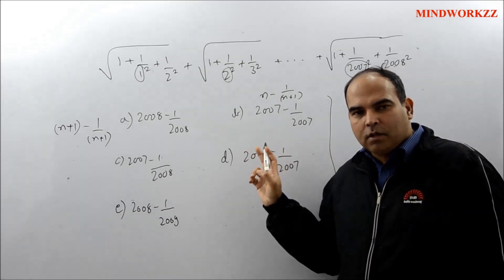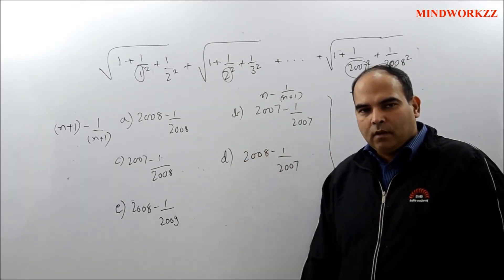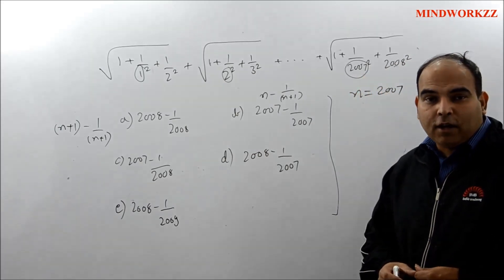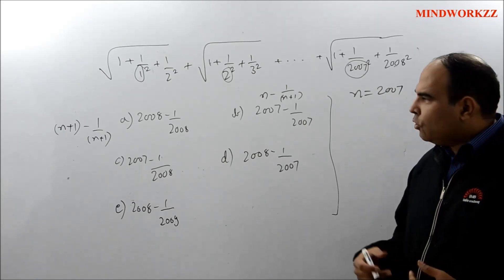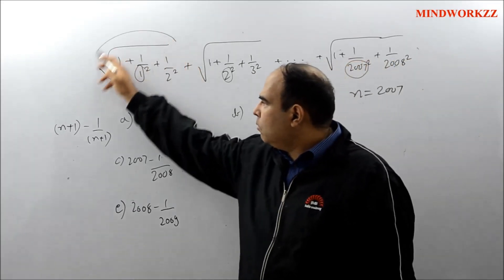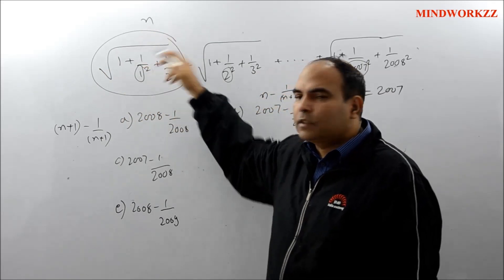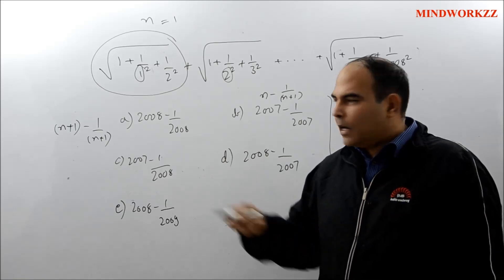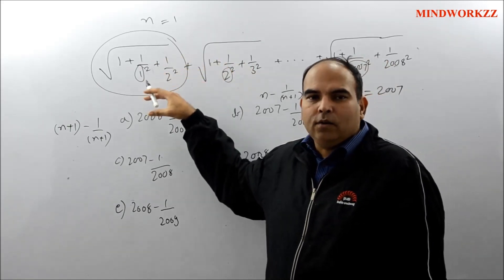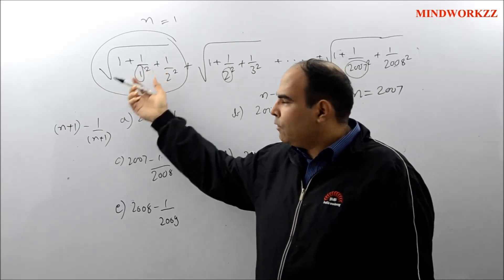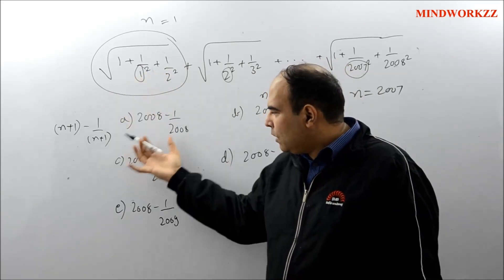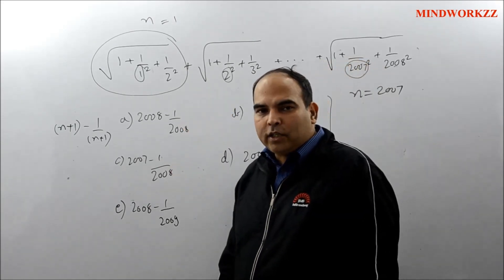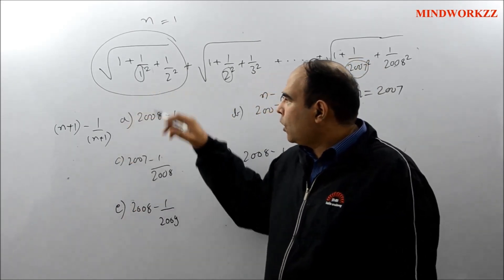Once you realize that, you can do something very convenient and quick: take only one term of this expression with n = 1. If you take only one term you get just the value of the first term, calculate it, and then see which option matches when n = 1.